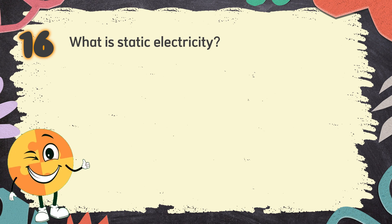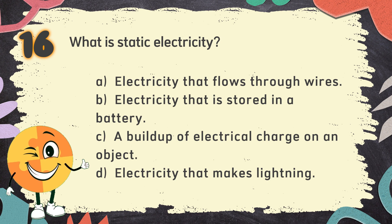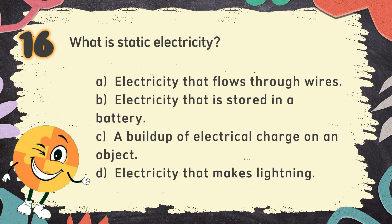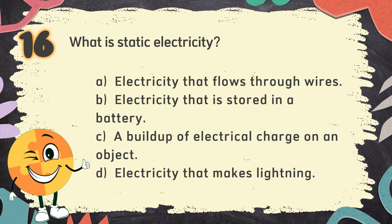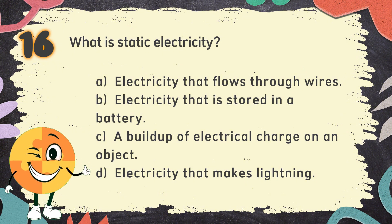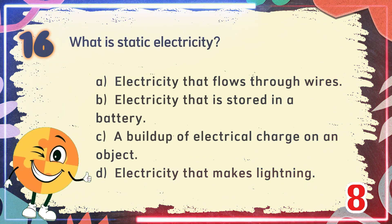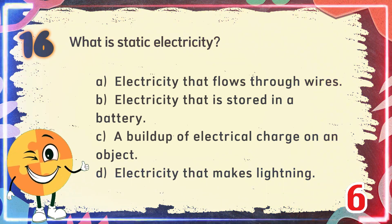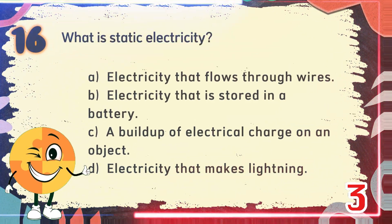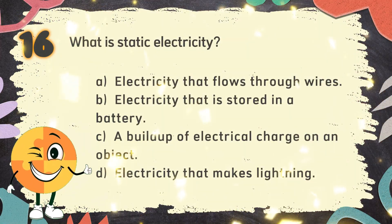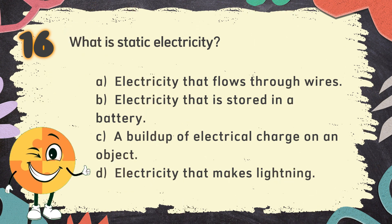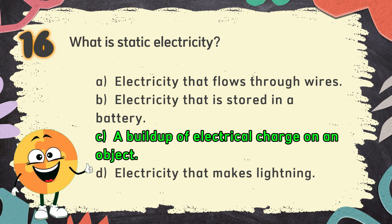Number 16. What is static electricity? The choices are: A. Electricity that flows through wires, B. Electricity that is stored in a battery, C. A buildup of electrical charge on an object, D. Electricity that makes lightning. The correct answer is C. A buildup of electrical charge on an object.